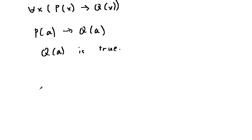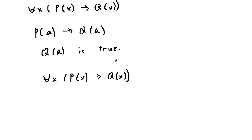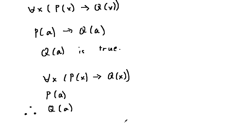Thus, we have the following rule of inference: for every x, p of x entails q of x; p of a; therefore q of a. This is called universal modus ponens.